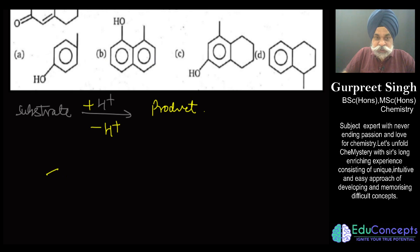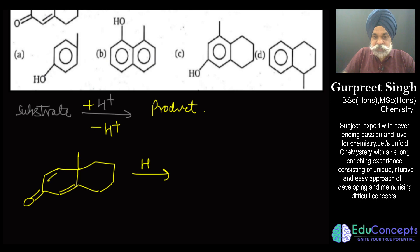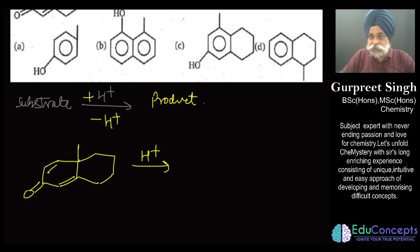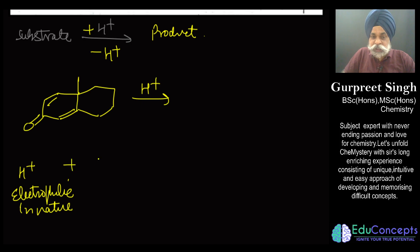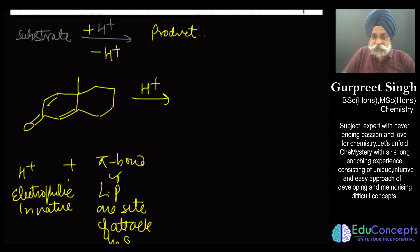In this question, the substrate is an alpha-beta unsaturated ketone to be treated with H⁺. Since H⁺ is electron deficient, it is electrophilic in nature. An electrophilic species will always seek either a pi bond or a lone pair as its site of attack in the substrate. Generally, lone pairs are more easily available.